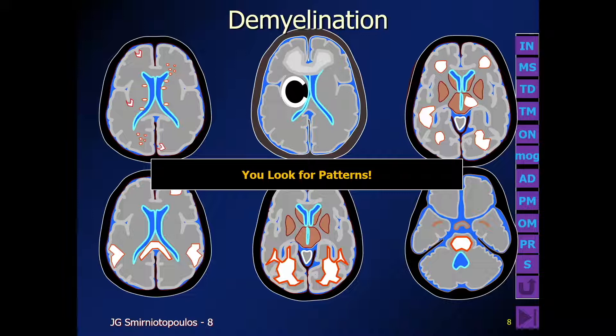We can look for periventricular small ovoid lesions. We can look for the open ring sign. We can look for peripheral marginal enhancement. We can look for rounded lesions that may involve the gray matter as well as the white matter and may spare the periventricular area. We can look at lesions that are more peripheral and come right up to the gray-white matter junction. We can look for a pattern of bilateral abnormalities in the white matter in the parietal occipital area, and for lesions that involve the central area of the pons. Each one of these leads us to a different differential diagnosis.